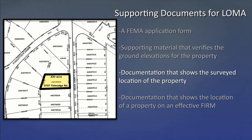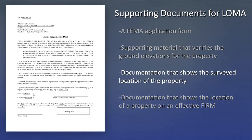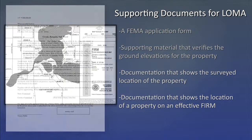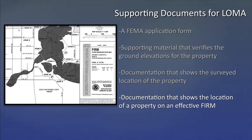Documentation that shows the surveyed location of the property, such as a copy of the plat map for the property or a copy of the deed in combination with a tax map or other suitable map. Finally, documentation that shows the location of the property on the effective FIRM, such as a photocopy of the relevant FIRM panel or a FIRMette created from the FEMA Map Service Center website. More information about FIRMettes and how to create them is included in video 12 in this series.